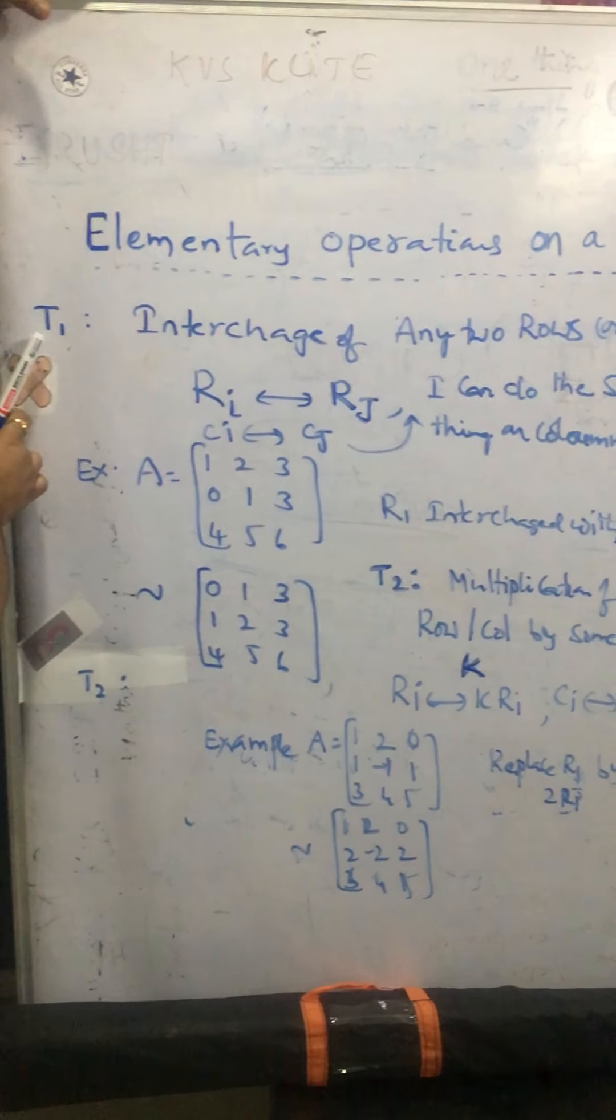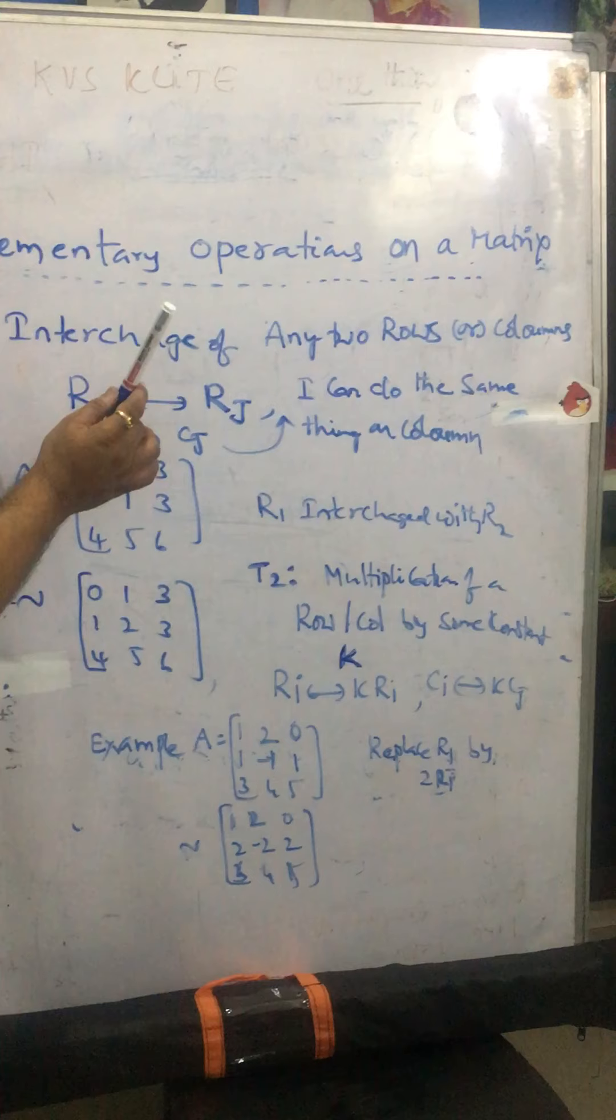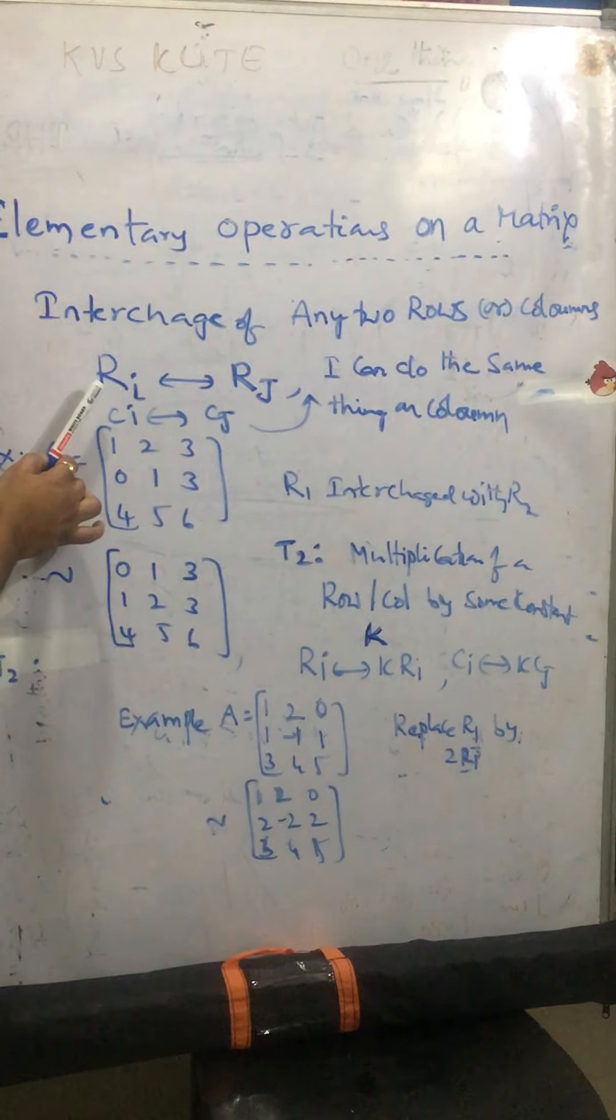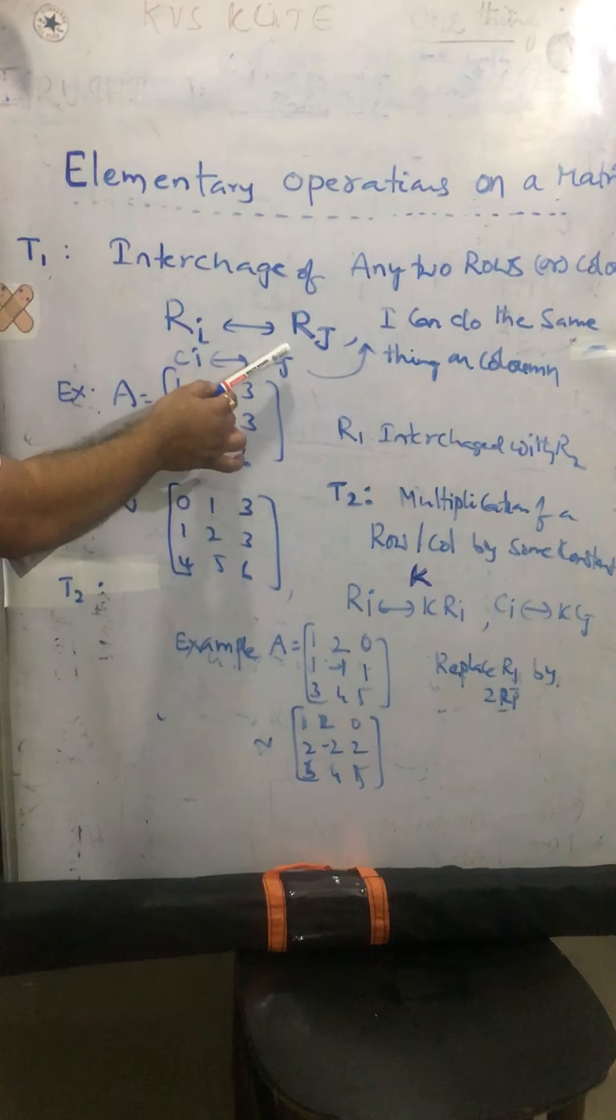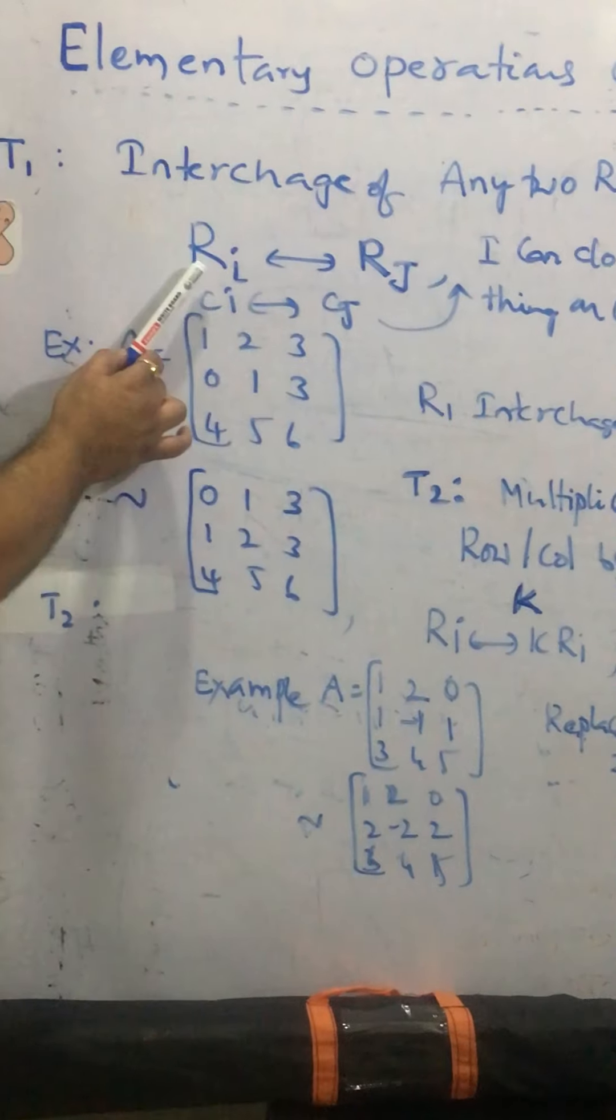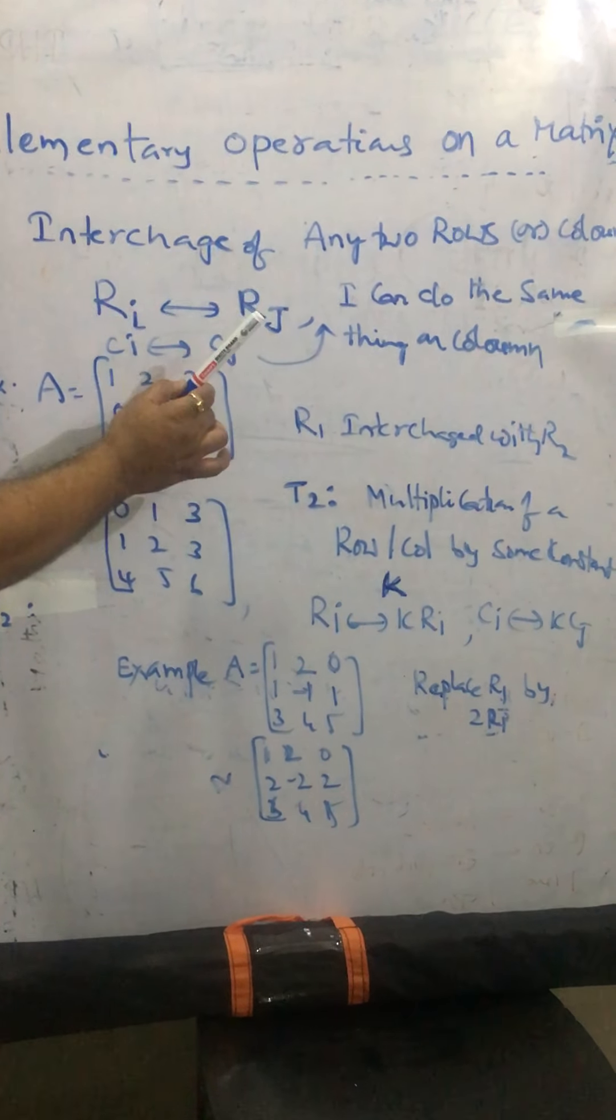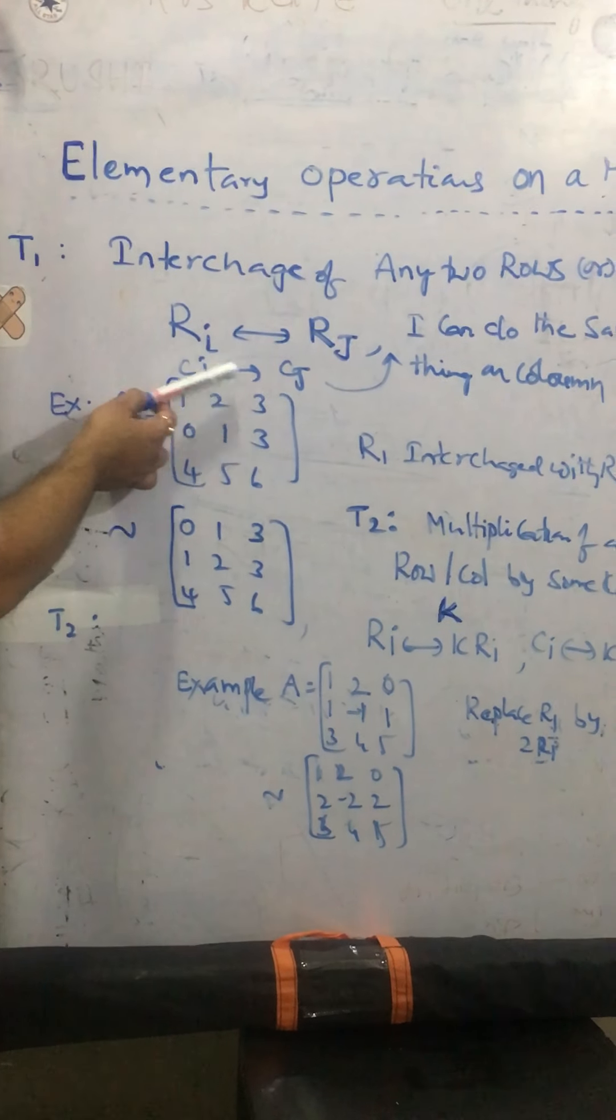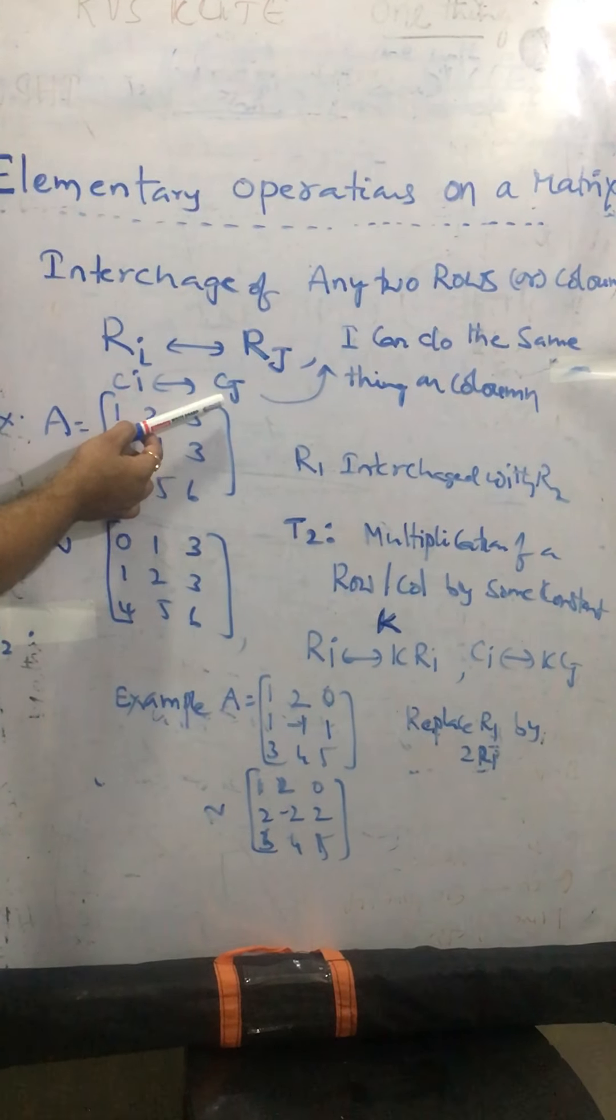So here the first one, transformation 1 is, interchange of any two rows or columns. So if you want to go in terms of row wise, interchange of ith row and jth row. I can do the same thing on column also. As a symbol CI in between, I am using some symbol CJ. Interchange of column I and column J.